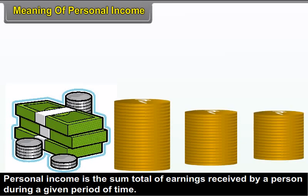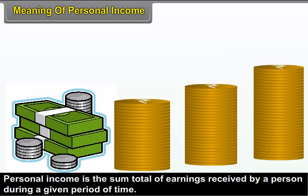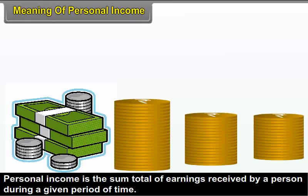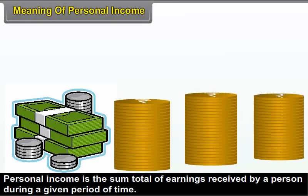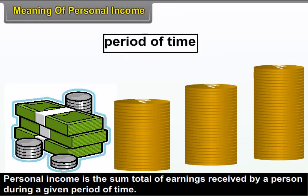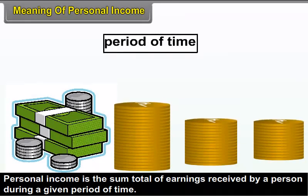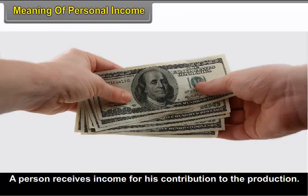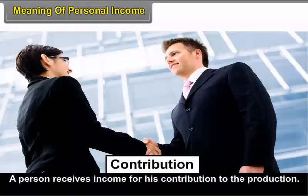3.2 Meaning of Personal Income. Personal income is the sum total of earnings received by a person during a given period of time. A person receives income for their contribution to the production.